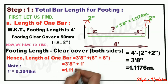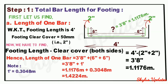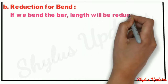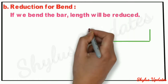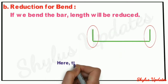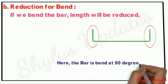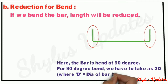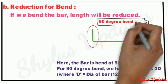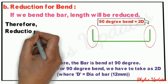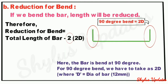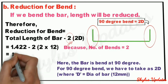Hence, the length of one bar is equal to 1.4224 meters. Reduction for bend: if we bend the bar, the length will be reduced. The bar is bent at 90 degrees. For a 90-degree bend, we take 2d where d is the diameter of the bar, here 12mm. Reduction for bend equals total length of bar minus 2 into 2d. The number of bends are 2, that's why I have written 2. When we solve this, we get the answer 1.374 meters.